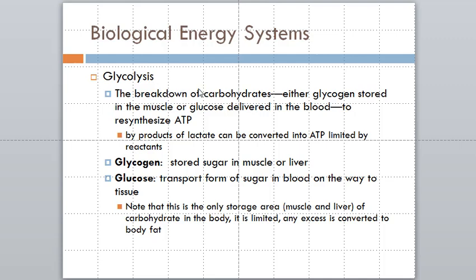The next energy system is the glycolytic system — glycolysis — which is the breakdown of carbohydrates. Carbohydrates are stored in two forms: either glycogen or glucose. Glycogen is stored only in the muscle or liver. Glucose is the transport form while it's in the blood. Glycogen is only stored in the liver or muscle — roughly 100 to 200 grams in the liver and 1,200 to 1,400 in the muscles, varying by individual. The key takeaway is that you have a limited supply of glycogen, and anything excess of that storage is converted to body fat.